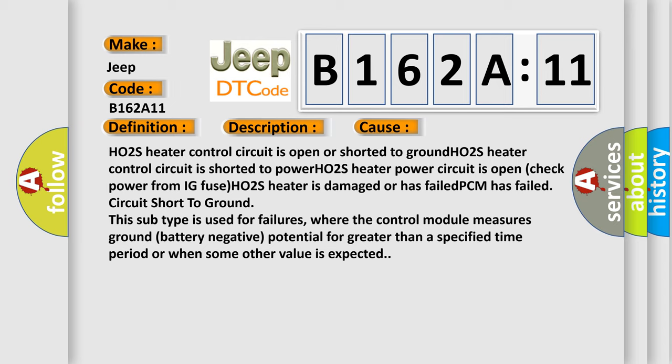This subtype is used for failures where the control module measures ground battery negative potential for greater than a specified time period or when some other value is expected.